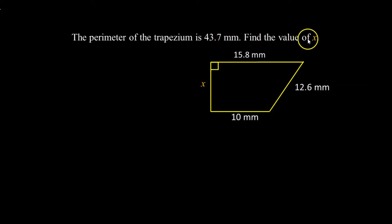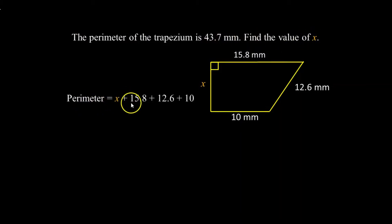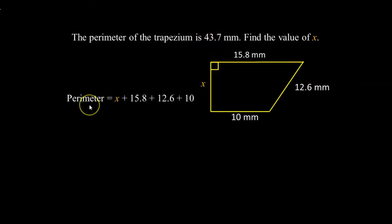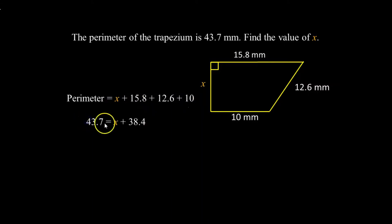Find the value of X. The perimeter is equal to X plus 15.8 plus 12.6 plus 10. Now that we know the perimeter is 43.7 millimeters, we can substitute that value, and then we have to add these three numbers. So 43.7 is equal to X plus 38.4 — this 38.4 is the sum of these three numbers.